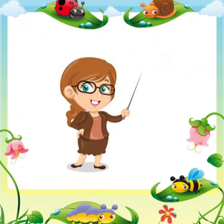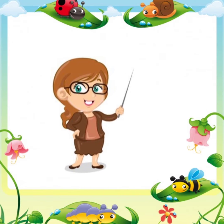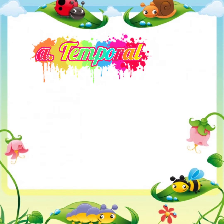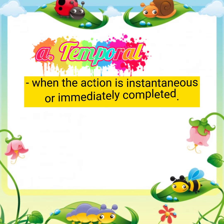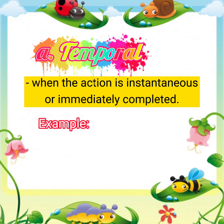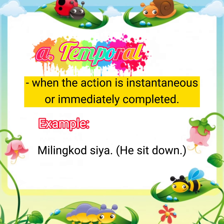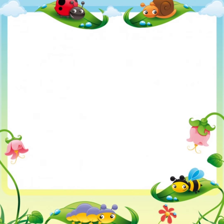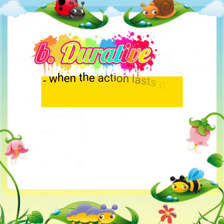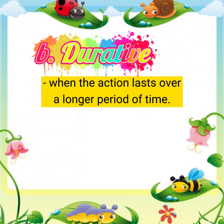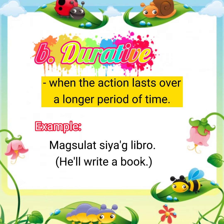First is temporal, when the action is instantaneous or immediately completed. For example: milingkod siya — he sat down. Second is durative, when the action lasts over a longer period of time. For example: magsulat siag libro — he'll write a book.